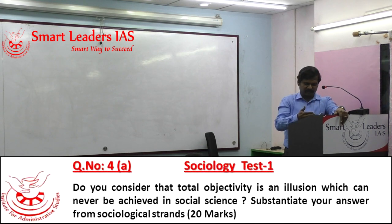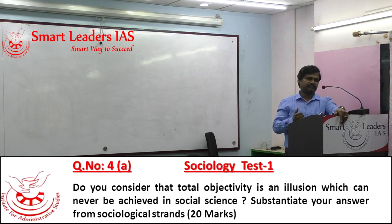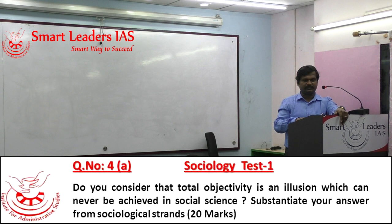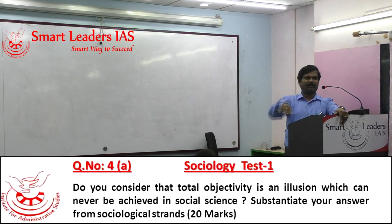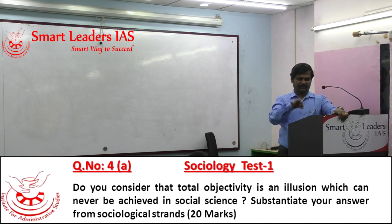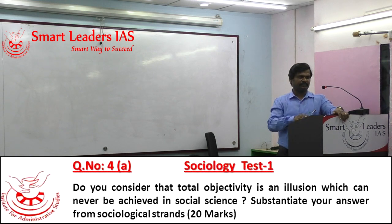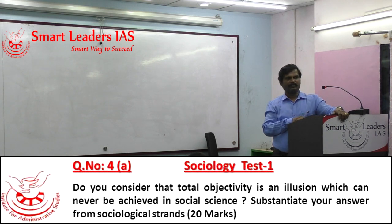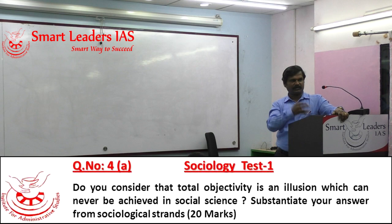Explain how positivism says objectivity is highly possible — write about Auguste Comte and write about Emile Durkheim. For non-positivism, write how objectivity cannot be guaranteed, because when science studies facts it is a subject studying an object and can be objective, but when a subject studies a subject it cannot be objective. So according to non-positivists, objectivity is not absolutely possible. Use symbolic interactionism, phenomenology, and Max Weber.